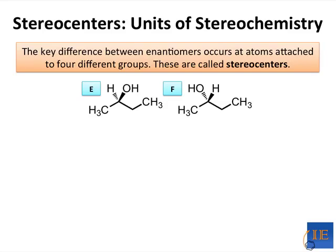The key difference between enantiomers occurs at atoms that are attached to four different groups, and these are typically carbons. We call these stereocenters because they're the center of stereochemistry. In E and F, the key carbon is this one with the wedges and dashes drawn off of it.